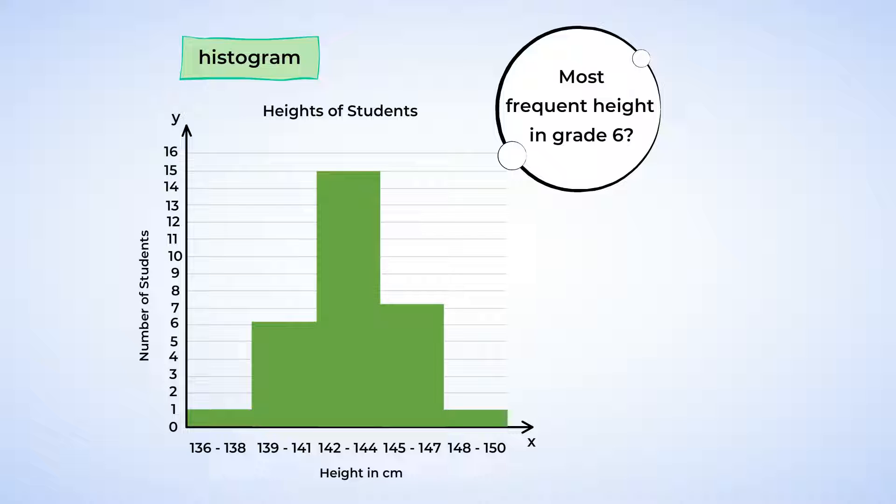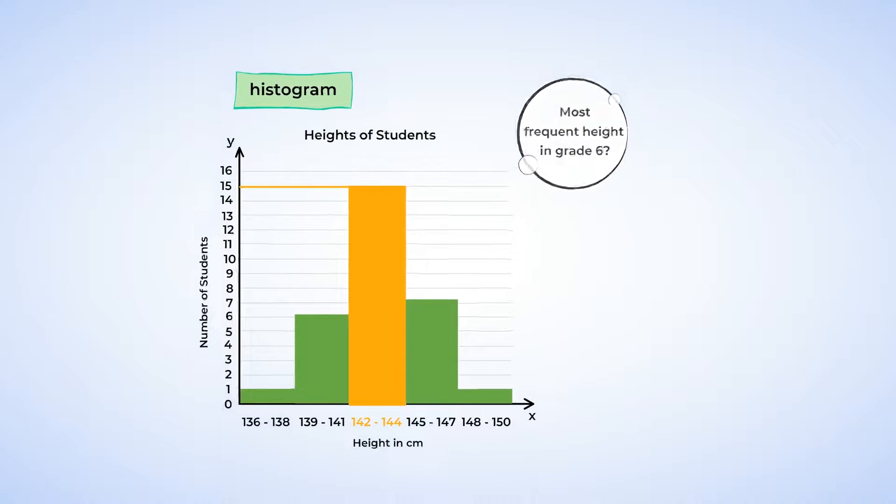Well, we can determine this by looking at the highest bar representing the most students within a bin. In our case, this is the bar with 15 students, meaning that the most frequent height in grade 6 is from 142 centimeters to 144 centimeters.